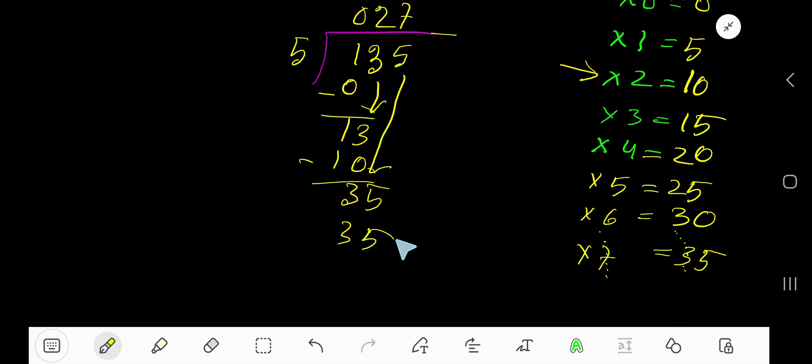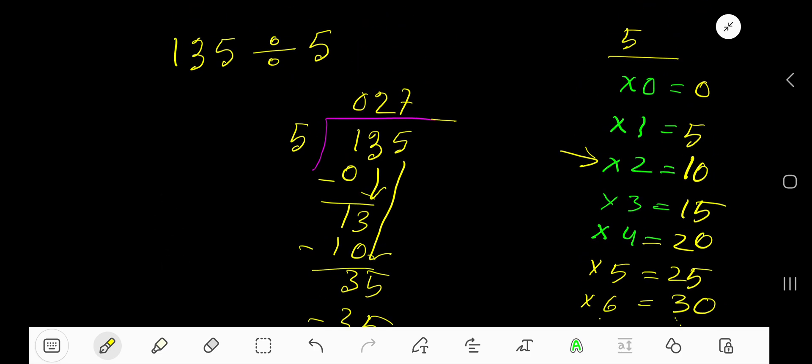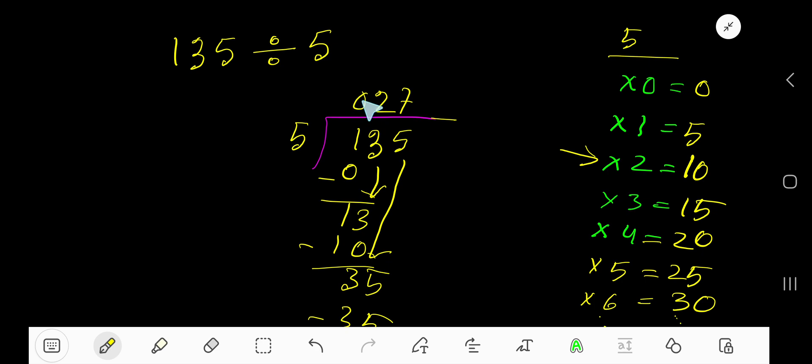If we subtract, we get 0. Since the remainder is 0, this is the answer. The leading 0 doesn't have any value, so 27 is your answer.